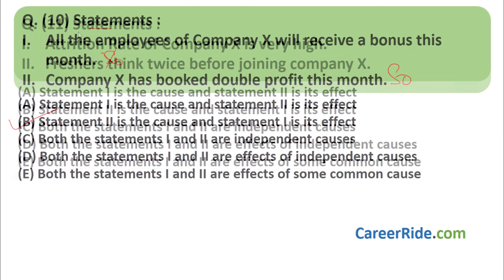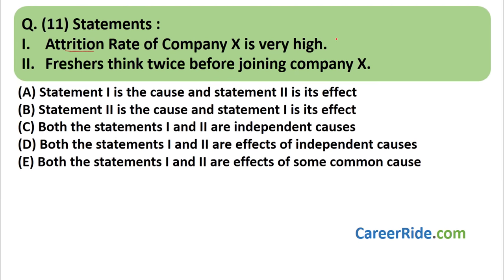Question number eleven. Statements: (1) Attrition rate of company X is very high. (2) Freshers think twice before joining company X. Combining: 'Attrition rate of company X is very high, therefore freshers think twice before joining' — this makes sense, since attrition means people leaving at a high rate, which makes freshers cautious. The reverse does not make sense. Answer is A — statement one is the cause, statement two is its effect.